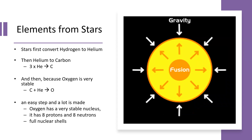Stars begin by fusing hydrogen to helium in their cores, the nuclear fusion releasing energy that resists the force of gravity and keeps them stable for a very long time. Larger stars are then able to generate enough pressure and temperature in the central core to convert some of the helium to carbon.